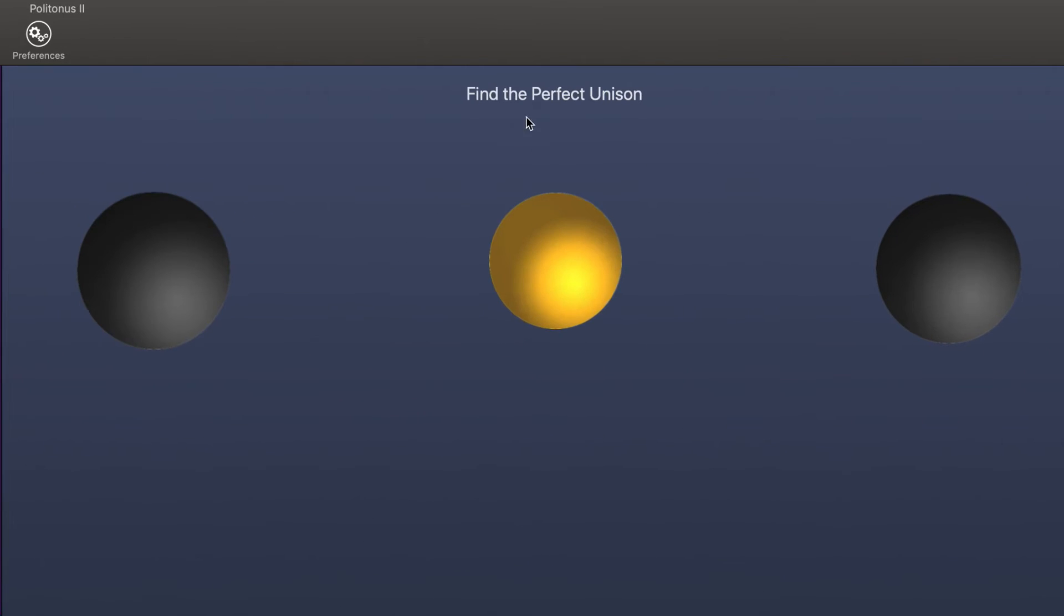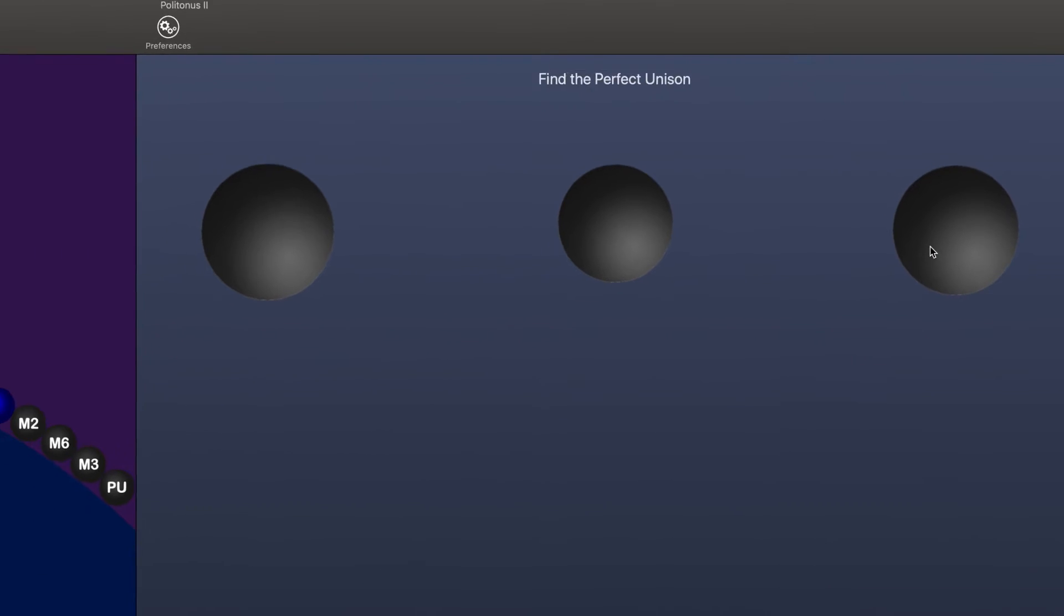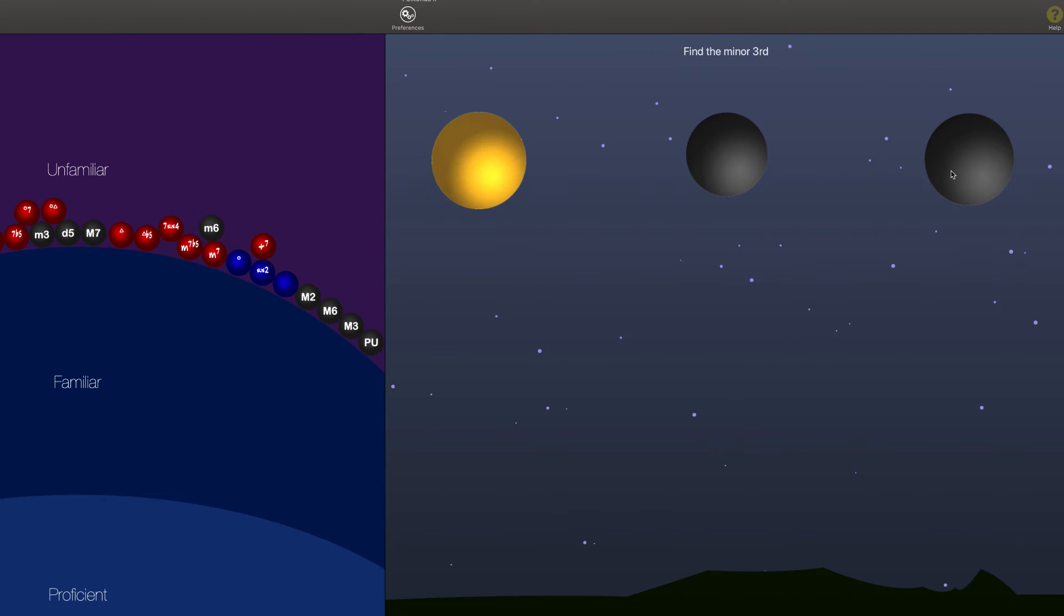It's asking me right here to find the perfect unison, and if I want to hear each sphere again, each example again, I can click on it. I think that's the unison. I double click, I get my check mark. The landscape in the back is starting to develop. As we get more and more right answers, you'll see more and more of this landscape evolve. Now it wants me to find the minor third, so I'm using my inner ear and hoping to anticipate what the minor third is going to sound like in my head first before I hear it. And that's the one.